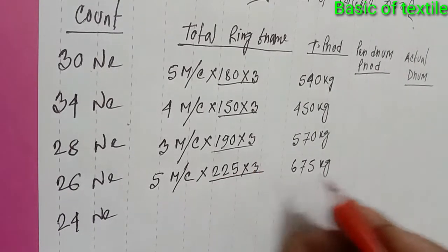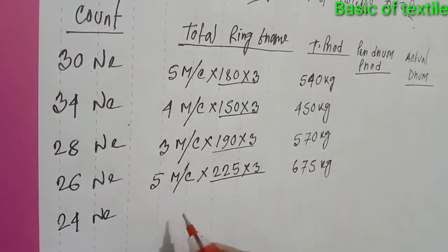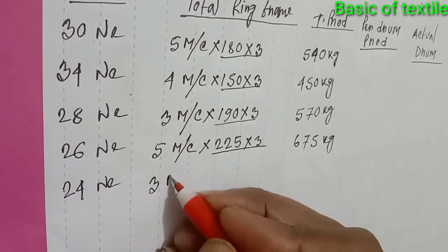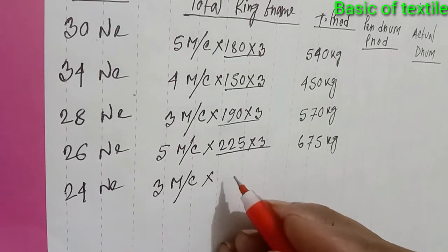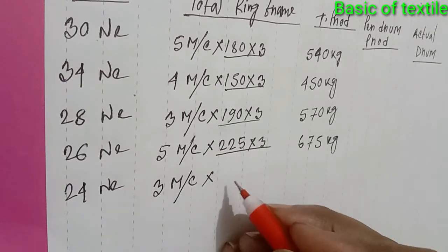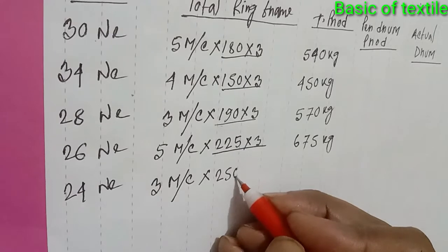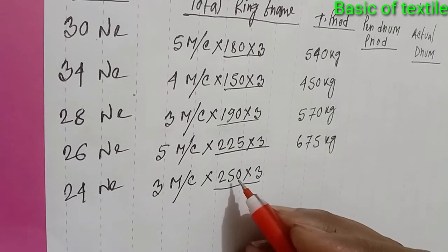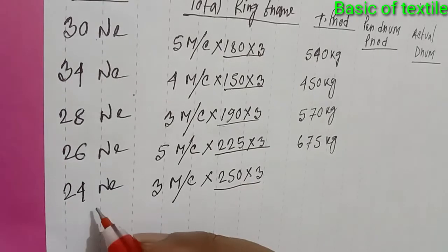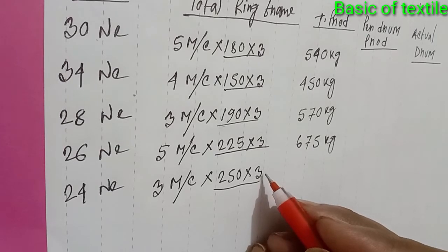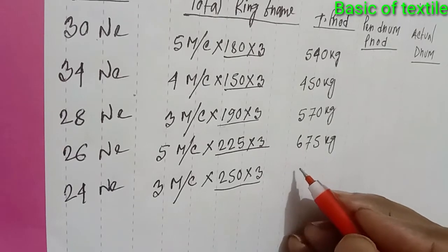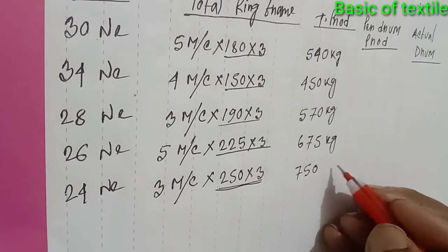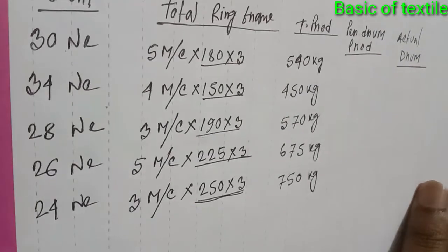675 kg. Then for 24 count — suppose 3 machines, into 8 hours — 1 machine for 24 count. The production will be 250 kg per shift. Production will be 750 kg. Okay, I think so you understand this.